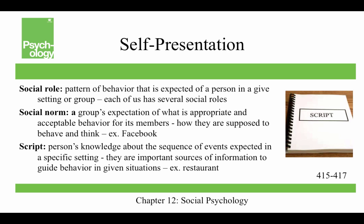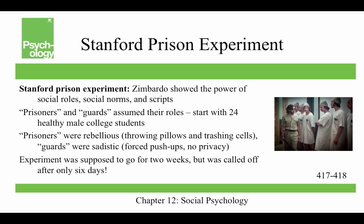A script is a person's knowledge about the sequence of events expected in a specific setting, and they're important sources of information to guide behavior in given situations. For example, there's a restaurant script, and there's a difference between a fast food and a sit-down restaurant. If you went to McDonald's and sat down at a table waiting for the server to come over, you're going to be sitting there for a long time. If you go to the Cheesecake Factory and walk up to the counter and say what you want, they're going to say, go sit down, and we'll send a server over to talk to you.